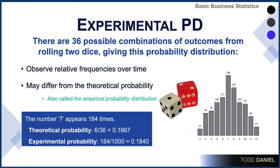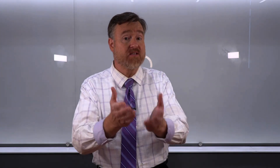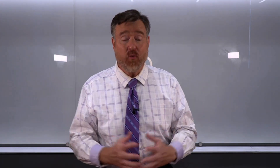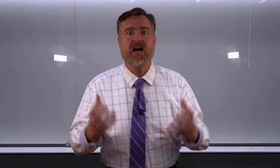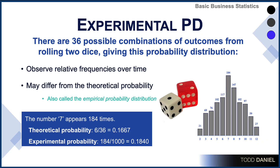Remember that this experimental probability distribution is what happened this one time. If we were to roll a pair of dice 1,000 more times, we would get a slightly different experimental probability distribution. But returning to this distribution, we see that it looks similar to the theoretical, but not exactly the same. The probabilities will be close, but they will not match precisely.